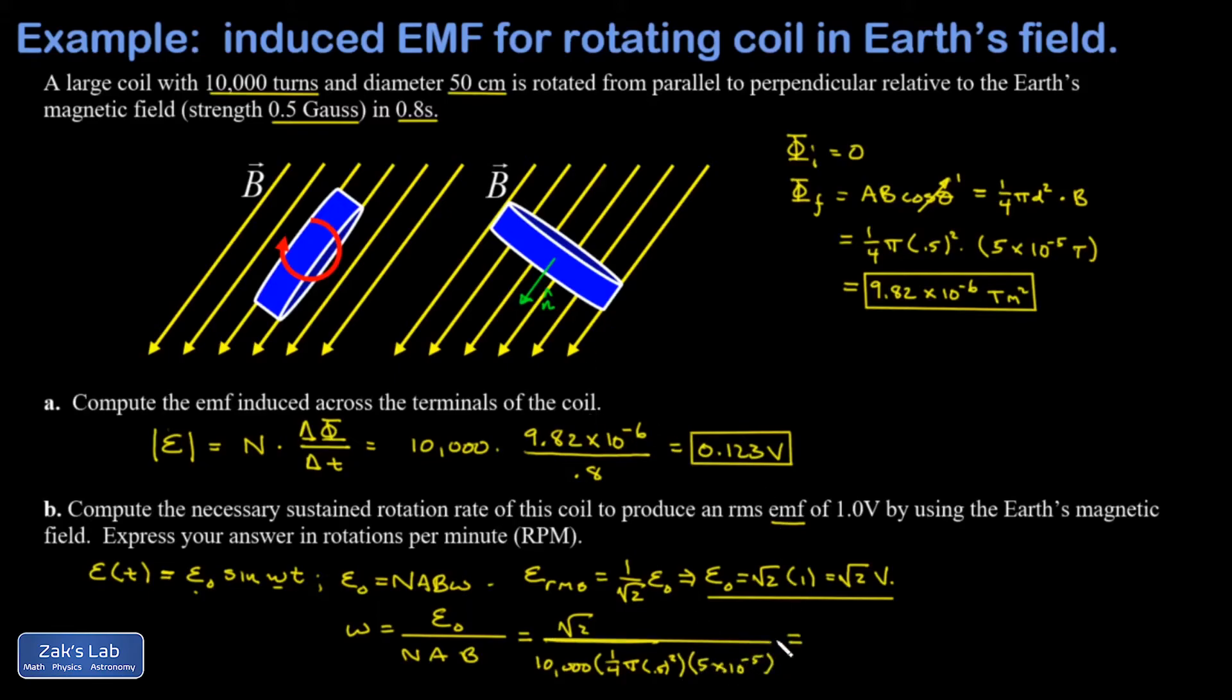When I run the numbers on this I get 14.4 radians per second, and that's a rotation rate. But I want to convert that to rotations per minute, which is a more standard way of talking about how fast things are spinning. I take my 14.4 radians per second.